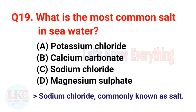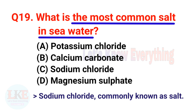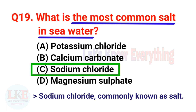Question 19: What is the most common salt in seawater? A) Potassium chloride, B) Calcium carbonate, C) Sodium chloride, D) Magnesium sulphate. The right answer is option C, Sodium chloride (NaCl), commonly known as salt.